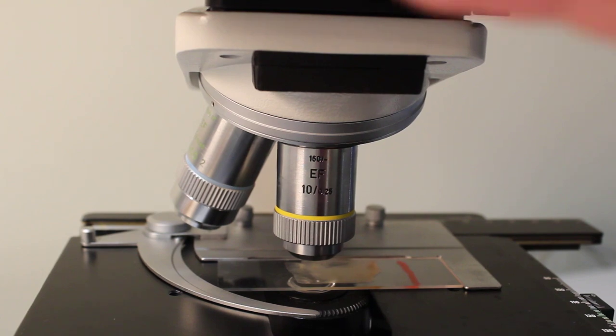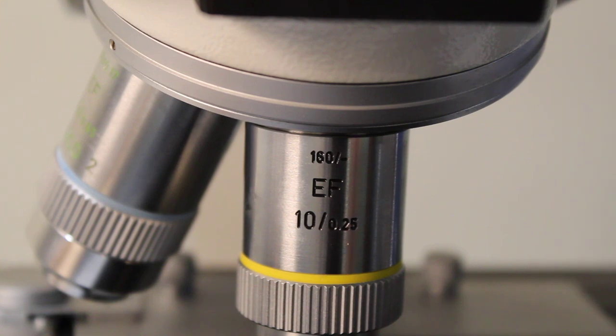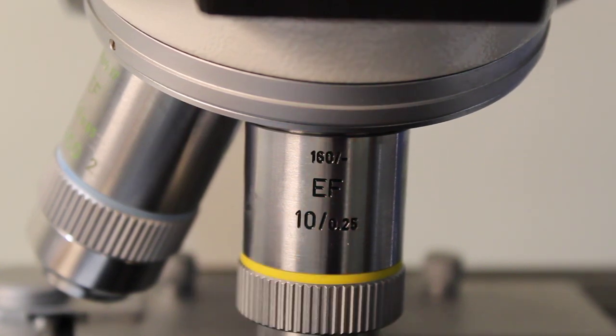Now when it comes to these lenses there are two values that you need to know. The first is the magnification which on this lens is the 10. So this is a 10x magnification and that tells you how much larger your sample will be or your object will be when viewed through that lens.